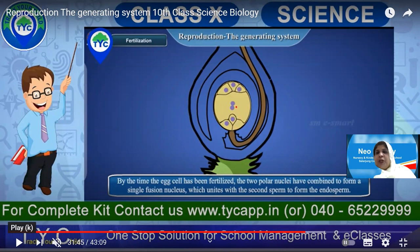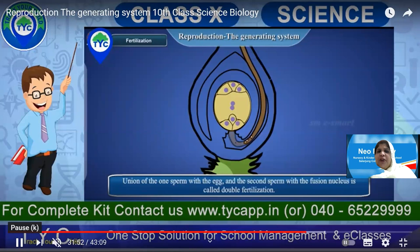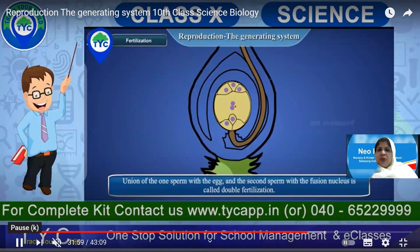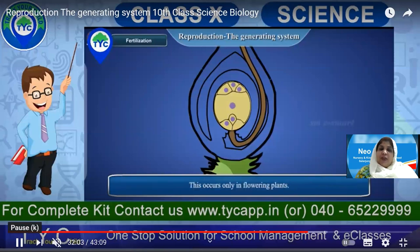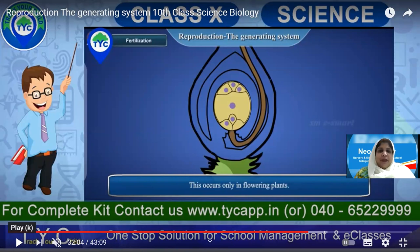By the time the egg cell has been fertilized, the two polar nuclei have combined to form a single fusion nucleus, which unites with the second sperm to form the endosperm. So one sperm is used to fertilize the egg and make a zygote, and the other sperm makes the endosperm. This union of one sperm with the egg and the second sperm with the fusion nucleus is called double fertilization. This occurs only in flowering plants — non-flowering plants do not have double fertilization as they do not form endosperm.